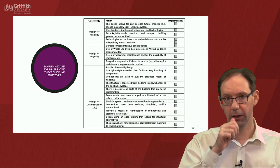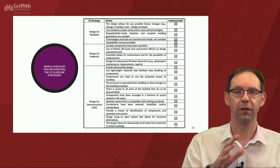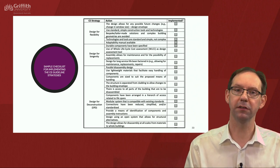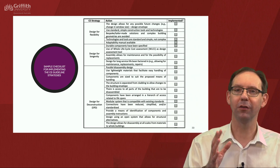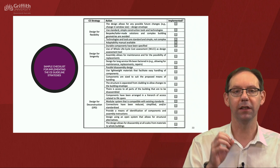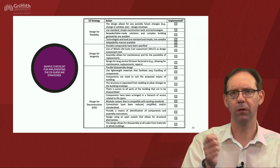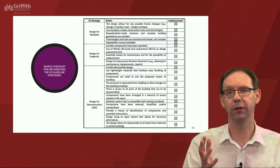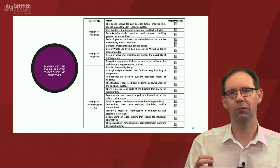Finally, a sample checklist is provided for implementing the circular economy guidelines and strategies. It covers the three strategies explored in depth — design for deconstruction, design for longevity, and design for flexibility — with specific actions listed for each. You are encouraged to devise your own checklist, ticking off actions to ensure everything has been addressed. Some actions may be more relevant than others depending on your project, and the checklist can be adapted and used in practice.